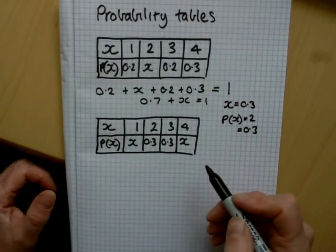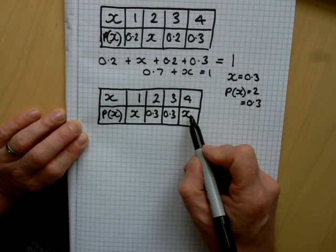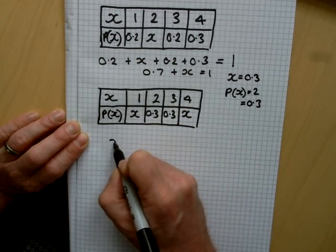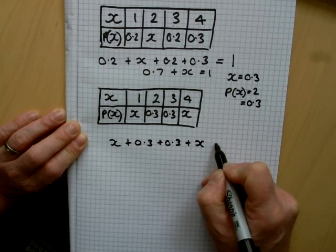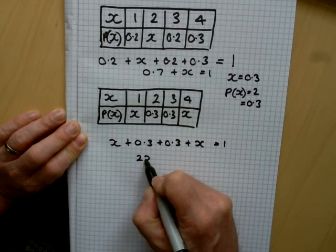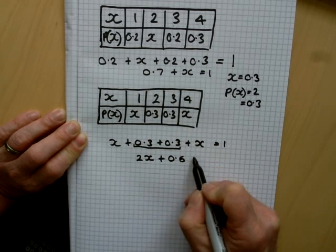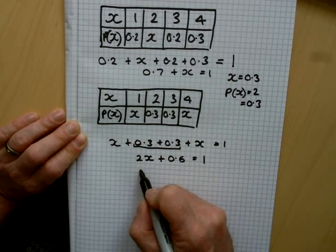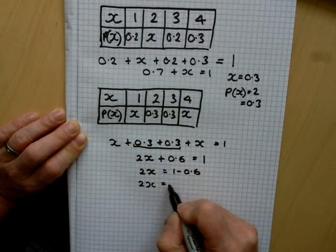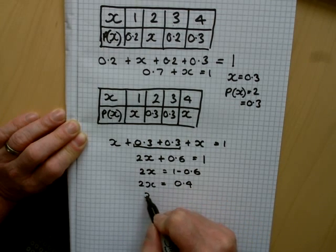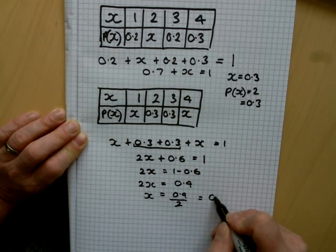Sometimes they give two values that are not known. In this case, we don't know the probability of x being 1, and we don't know the probability of x being 4 either. But in the same way, we write our equation using the fact that all probabilities add up to 1. We bring the x terms together: 2x plus 0.6 equals 1. Taking 0.6 away from 1, we get 2x equals 0.4. Dividing by 2, the value of x is 0.2.